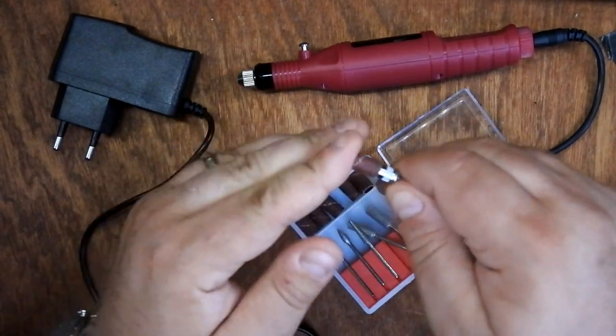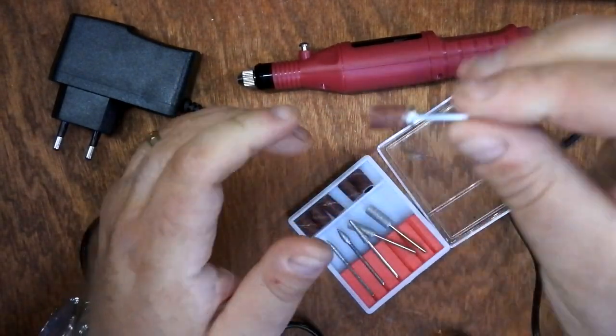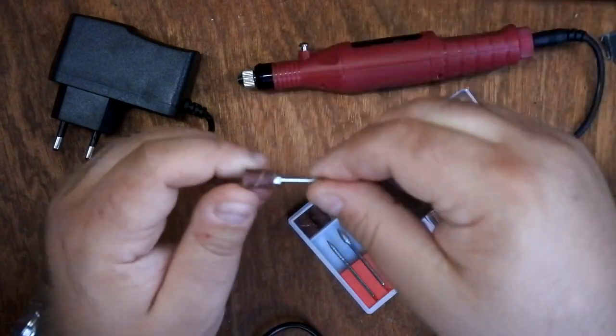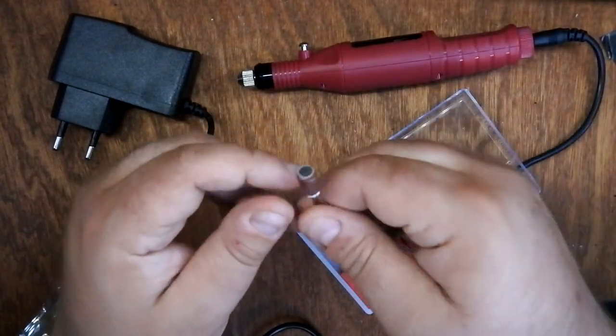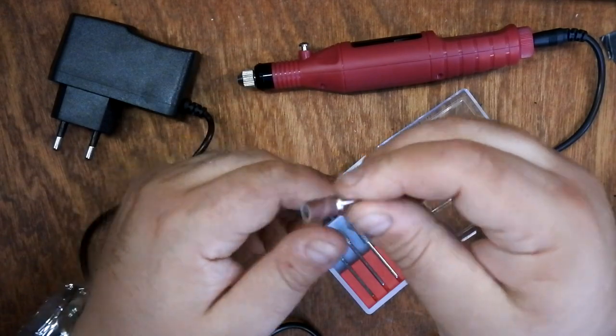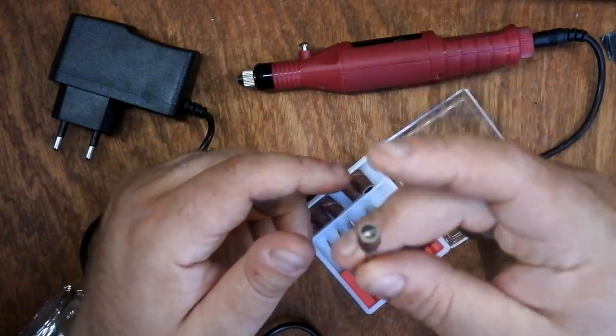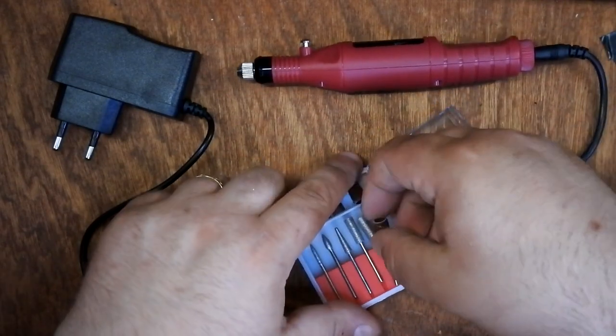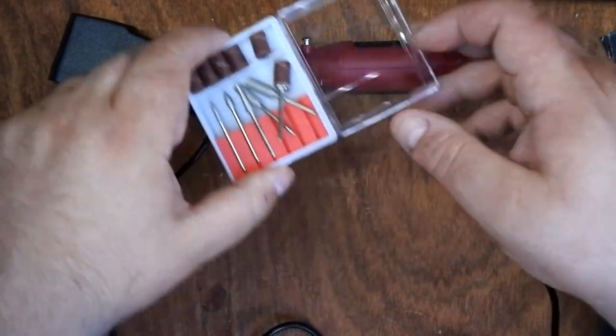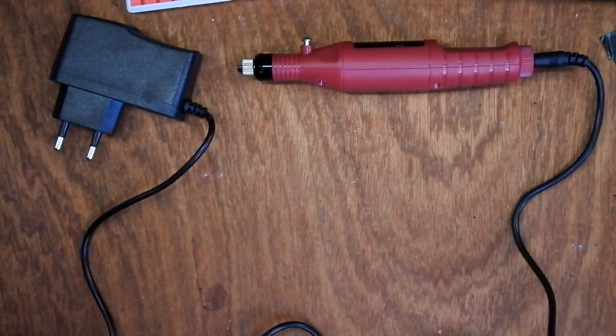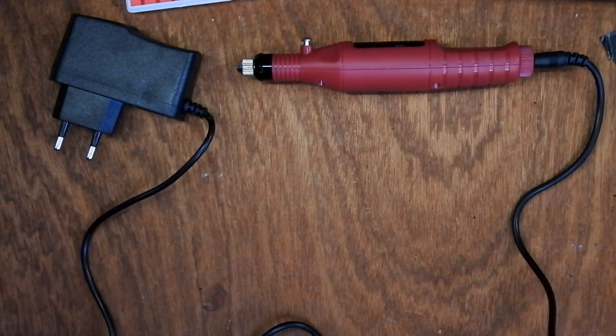So it's an interesting product. They also come with these sanding things which feel just like what you would get in a Dremel kit. Very rough. This is the sort of thing you'd use for scraping paint off metal or rust off metal. It's quite heavy duty. So anyway, enough of me waffling on. Let me plug this thing in. Where is the adapter?